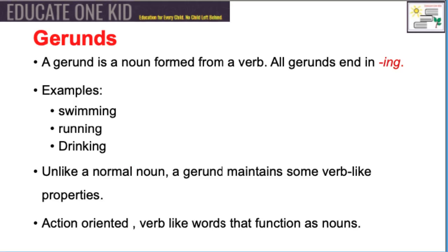A gerund is a noun formed from a verb. They usually all end in -ing. A few examples are swimming, running, and drinking. Unlike a normal noun, a gerund maintains some verb-like properties. It is an action-oriented, verb-like word that functions as a noun.